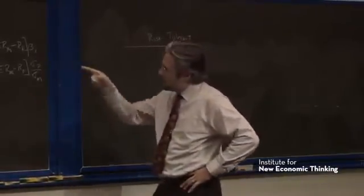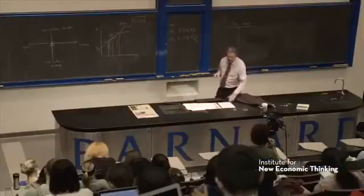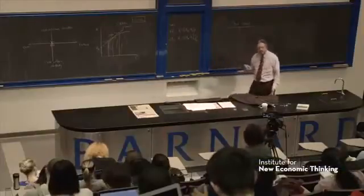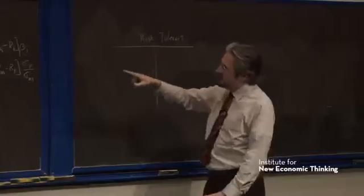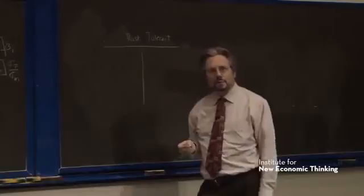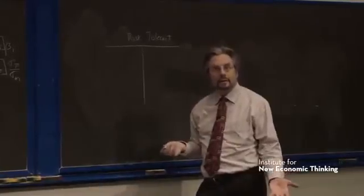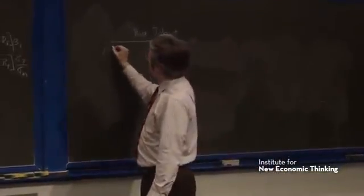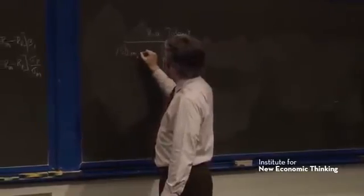Both of them have $100 worth of wealth. The risk-tolerant person puts more than all of their wealth in the market portfolio, and they borrow in order to do that. So let's say they have 150 in the market, the risky portfolio.